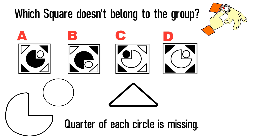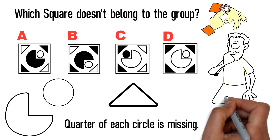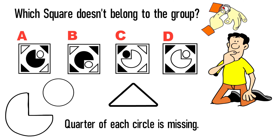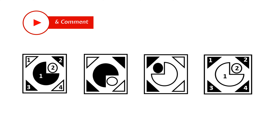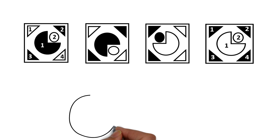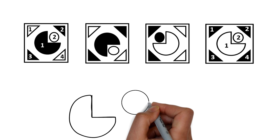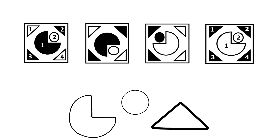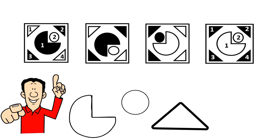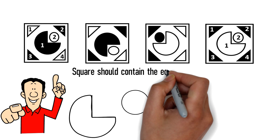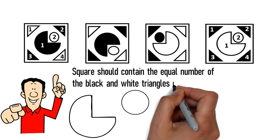The key to solving this challenge is to detect the pattern — this is the skill you need to develop to be successful on the test. Because there are two shapes present — triangles and circles — you should try to detect the pattern among triangles and then among circles. In this particular question there is only one pattern: the pattern of the triangles. The pattern is that each square should contain an equal number of black and white triangles in the corners.